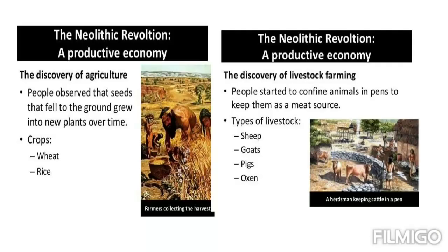The Neolithic Revolution, also called the Agricultural Revolution, marked the transition in human history from small nomadic bands of hunter-gatherers to large agricultural settlements. The Domestication or Livestock Revolution is the process by which farmers select desirable traits for breeding successive generations of animals. Not only animals — they also selected crops that harvested easily.